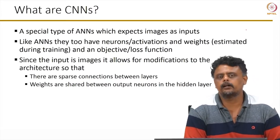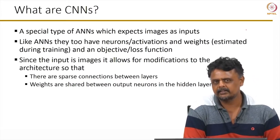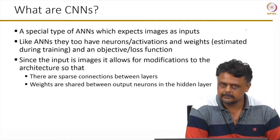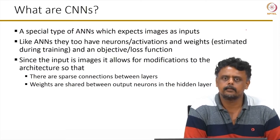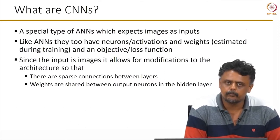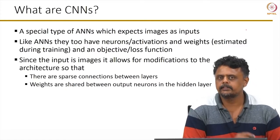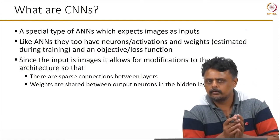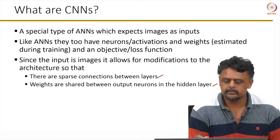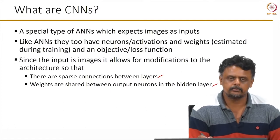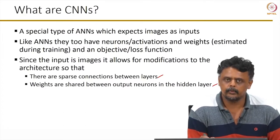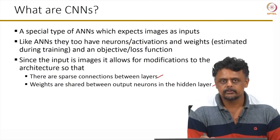Because the input to these networks is images, it allows for two things: sparse connections and parameter sharing. It is possible to have sparse connections as well as weight sharing of weights between the output neurons in a layer.